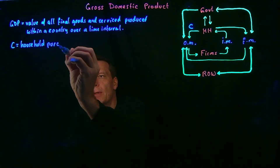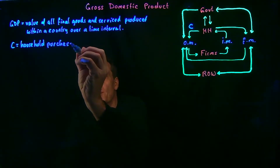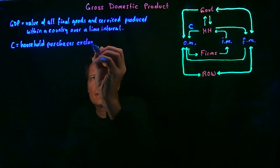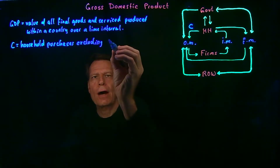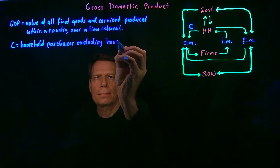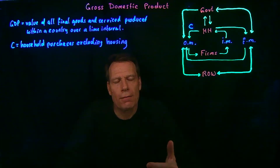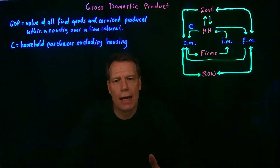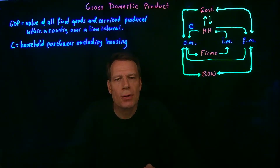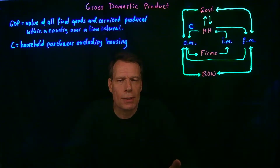With one important exception, we exclude from those purchases residential housing. The reason we exclude housing is because if you buy a house, you don't actually consume the services of that house in the current time interval — this quarter or this year. Instead, you're going to be consuming those services over a long period of time. So instead of considering spending on housing as consumption, we consider it as investment.